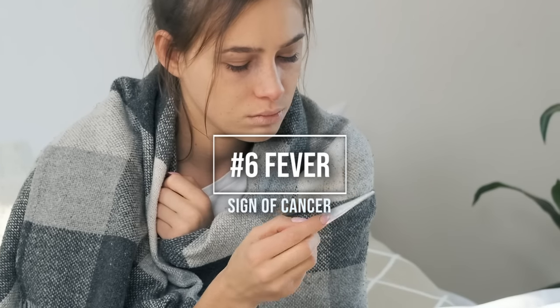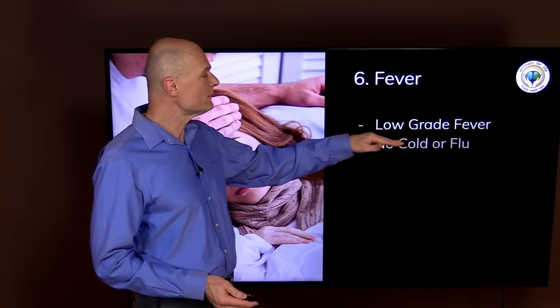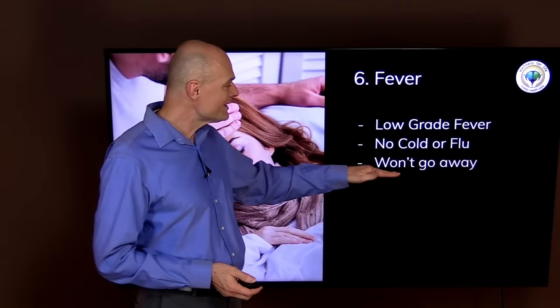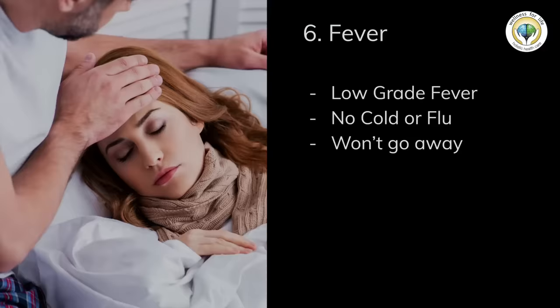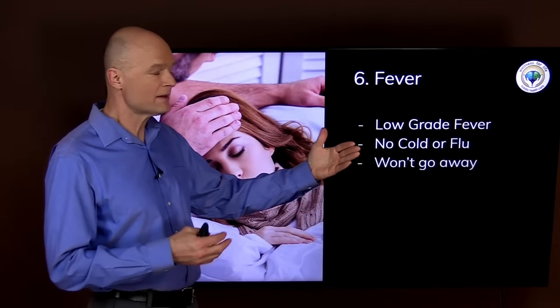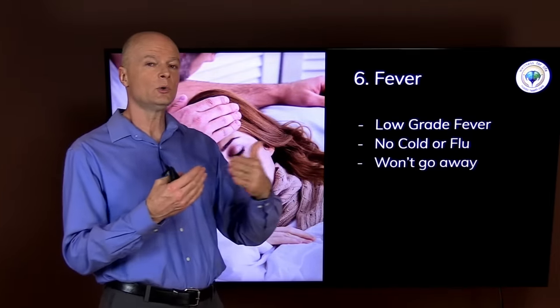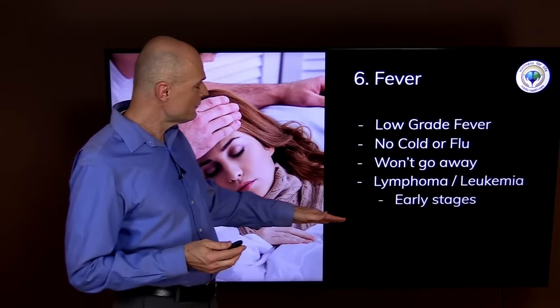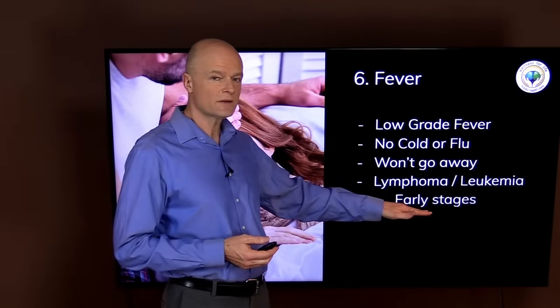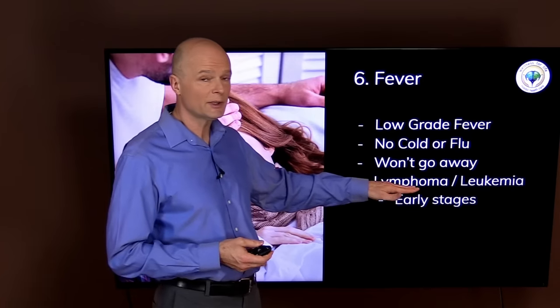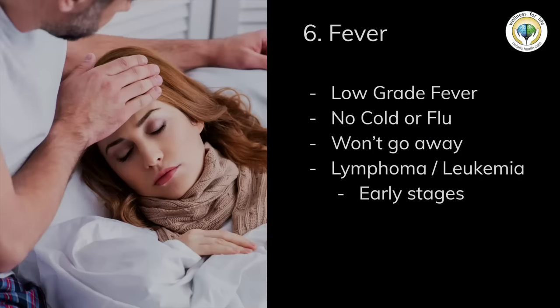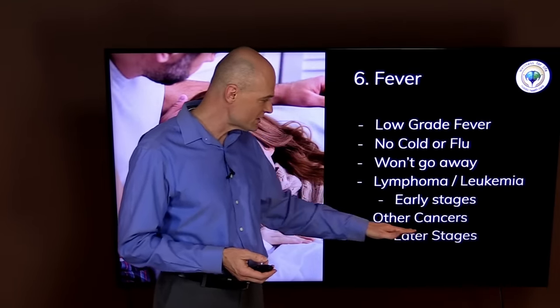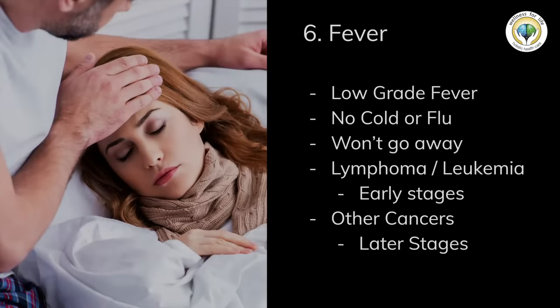Number six is a fever. That would usually be a low-grade fever in the absence of you having a cold or a flu, and it's something that won't go away. It persists for weeks. It may not be there all the time, it could come and go during different times of the day, but it's very persistent. Usually if you get fever in the early stages of the disease process it means it's a blood-borne cancer like lymphoma or leukemia. But if it comes in the later stages, more advanced stages of cancer, then it would be something other than a blood-borne.